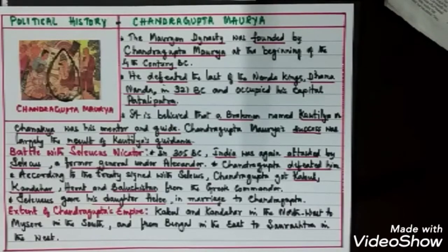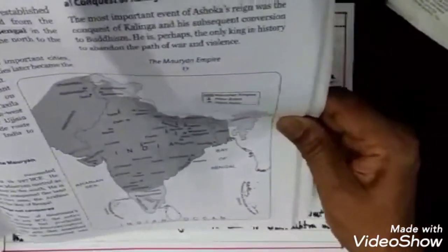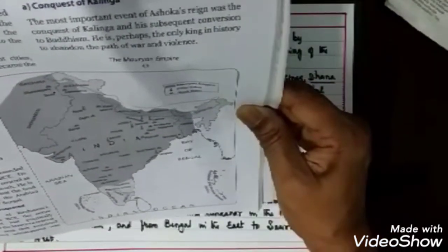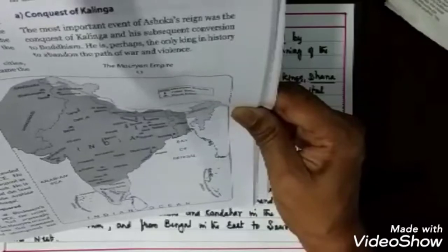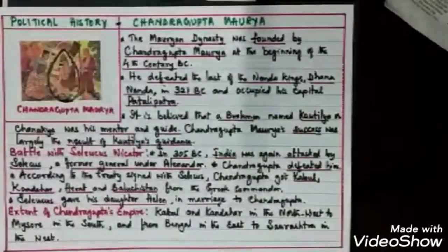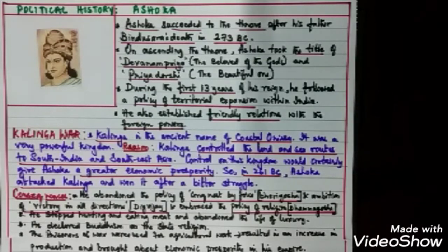The Mauryan Empire stretched from present-day Afghanistan up to Myanmar in the east, and from the Himalayas down to Mysore in the south. The next most important ruler was Ashoka. Ashoka was the son of Bindusara, who was the successor of Chandragupta Maurya. After ruling for 24 years, Chandragupta Maurya renounced the world and handed over the kingdom to his son Bindusara.